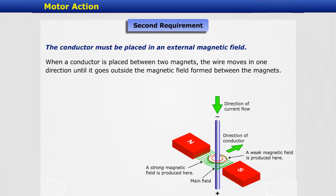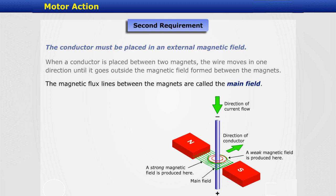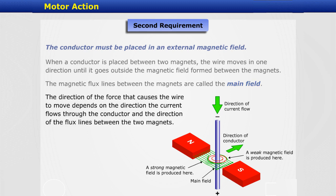The conductor must be placed in an external magnetic field. When a conductor is placed between two magnets, the wire moves in one direction until it goes outside the magnetic field formed between the magnets. The magnetic flux lines between the magnets are called the main field. The direction of the force that causes the wire to move depends on the direction the current flows through the conductor and the direction of the flux lines between the two magnets.